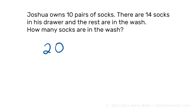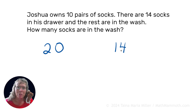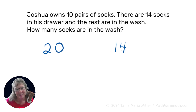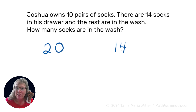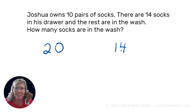But only 14 are in his drawer. So we have 20 and 14, and it asks how many are in the wash. Can you see the answer already? Maybe you can. But to write an equation for this problem, we need an unknown. The unknown is how many socks are in the wash — that's what we don't know, so that's why it's the unknown.